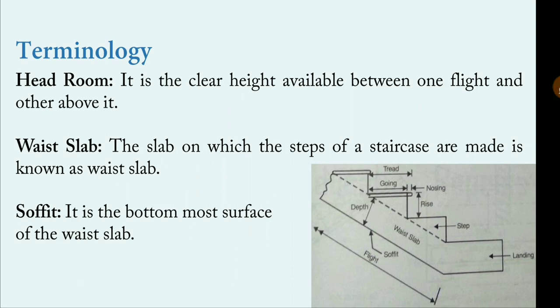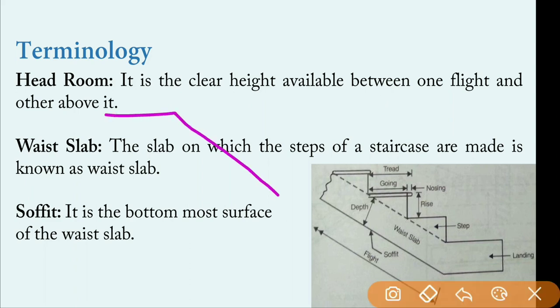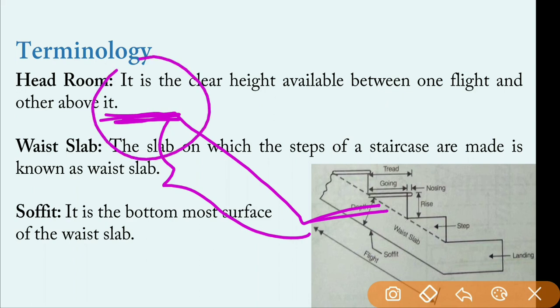Headroom is the clear height available between one flight and the one above it. This is one flight, and above the intermediate landing there must be some clear height so that a person can rest on the landing slab or carry items from one floor to another comfortably. This clear height is called the headroom — it is the clear space available above the landing or above the steps.